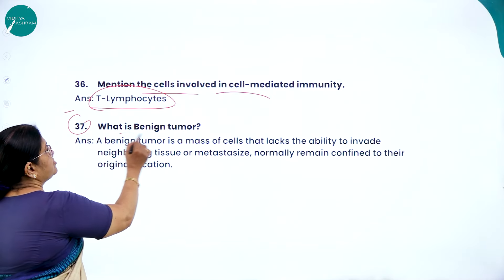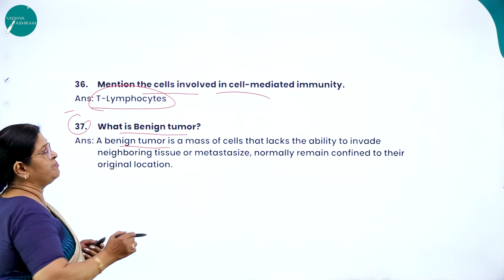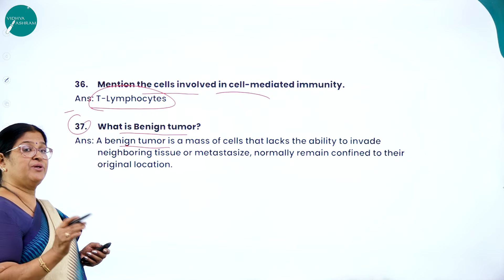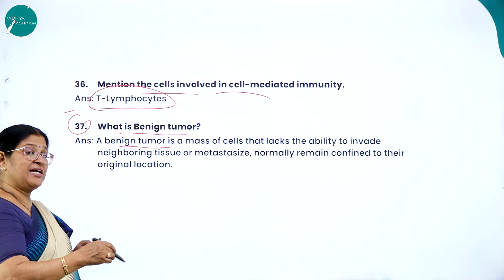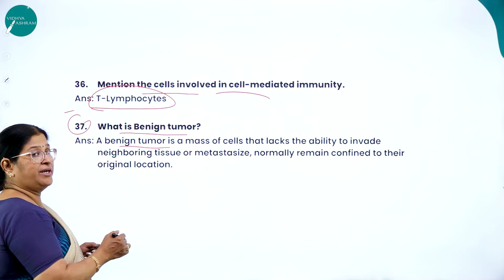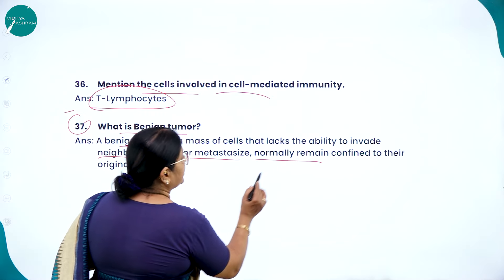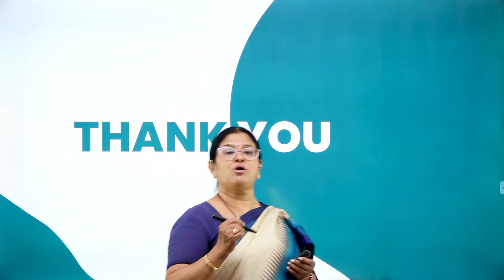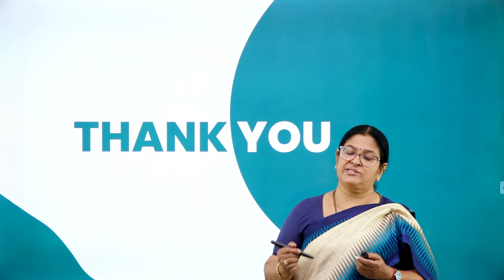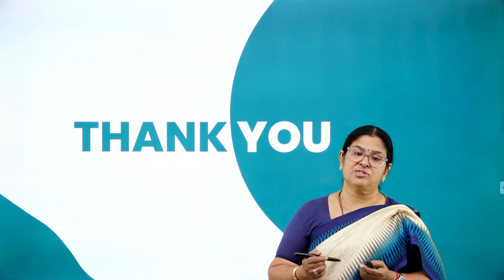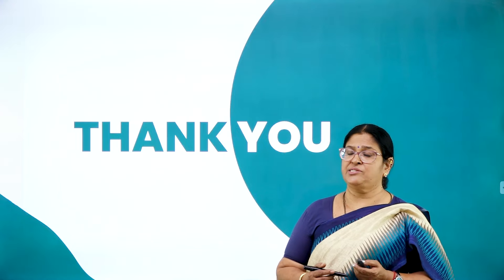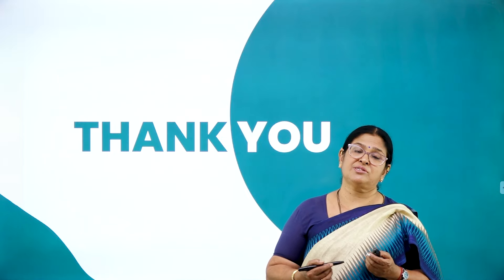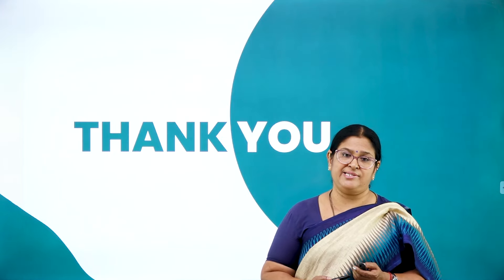The cells involved in cell-mediated immunity are T lymphocytes. What is a benign tumor? A benign tumor is a mass of cells that lacks the ability to invade neighboring tissue or metastasize; it normally remains confined to its original location. In contrast, malignant tumors invade surrounding areas and organs. I hope you have understood the important concepts discussed in this revision session of Human Health and Diseases of second PUC biology. Thank you.